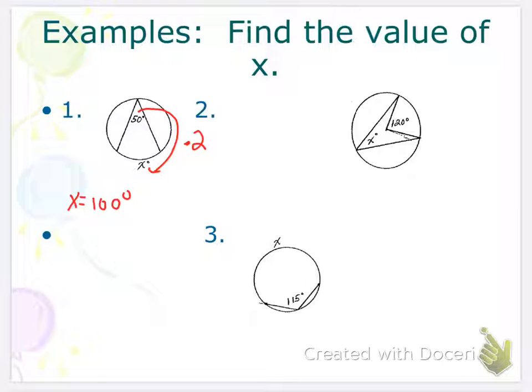Again, you could have done the formula. 50 equals 1 half measure of any arc AB, multiply each side by 2, and you would arrive at the same thing.